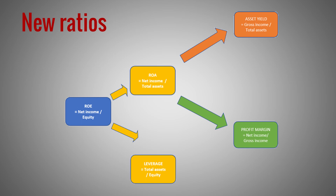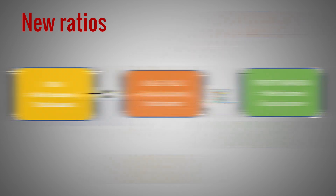The difference between gross and net incomes are the costs. Thus, the profit margin shows how well the bank manages its costs given a certain level of revenues. We can multiply the asset yield and profit margin to find the return-on-assets. The asset yield sheds light on how the bank generates its revenues, while the profit margin shows how the financial institution manages its costs.